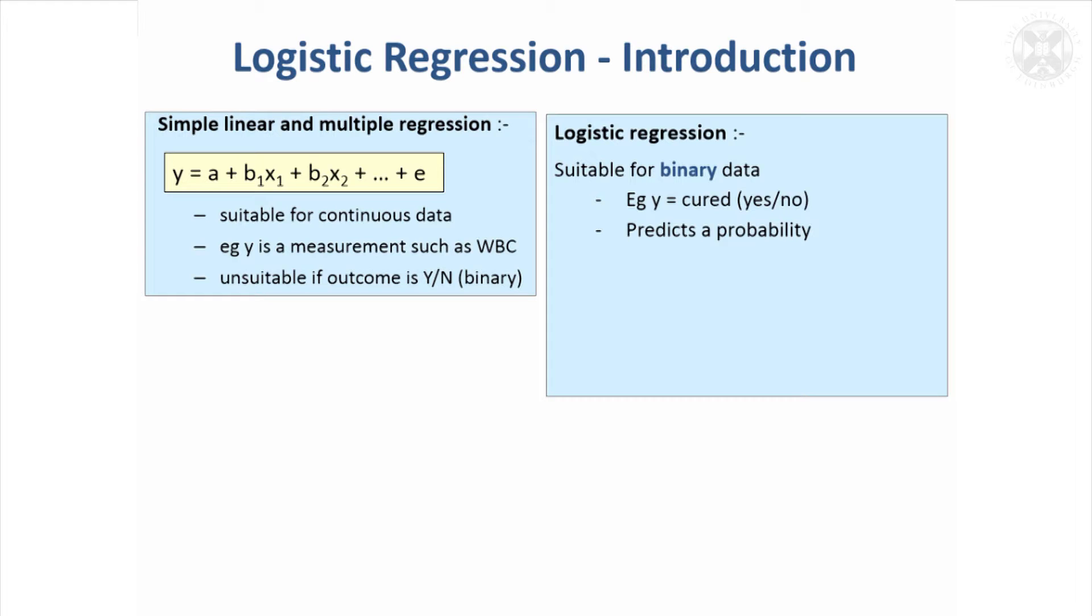I think the only thing to take note of today is that logistic regression is suitable for binary outcomes. So rather than trying to predict a measurement, you're trying to predict something that does happen or doesn't happen. You're trying to predict a probability based on your equation.